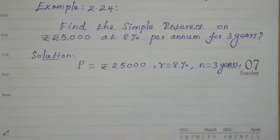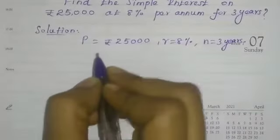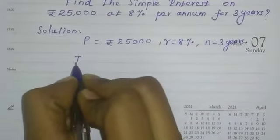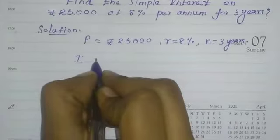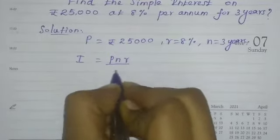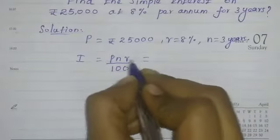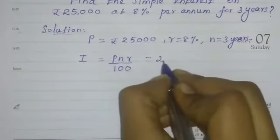Time period, then find the simple interest. Simple interest I, let's write the formula. Simple interest I equals P into n into r, PNR by 100, which is equal to the value of P, 25,000.